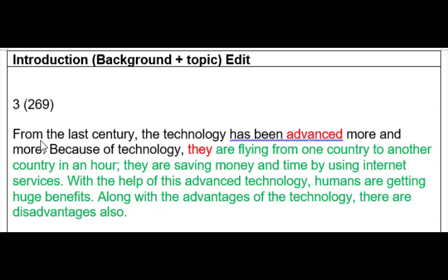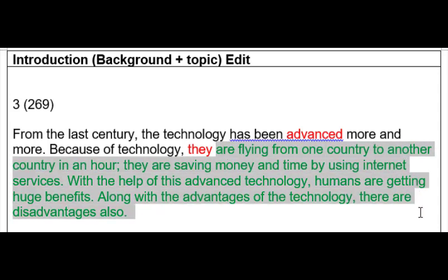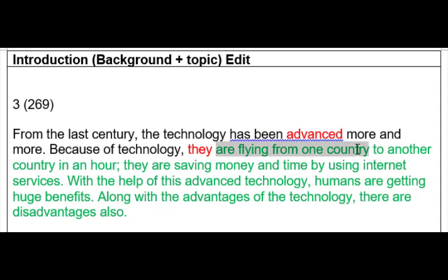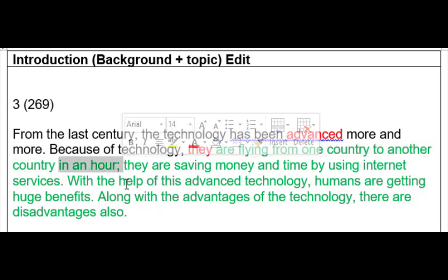Here's the third example. 'Technology has been advanced' — if you use the present perfect continuous it should have the -ing form. The second sentence uses 'they' with no clear reference. Saying you can fly from one country to another in an hour just makes your writing seem very amateurish. I wouldn't suggest that.